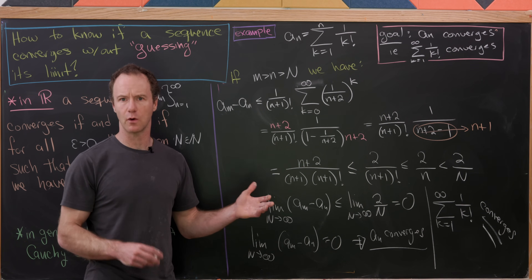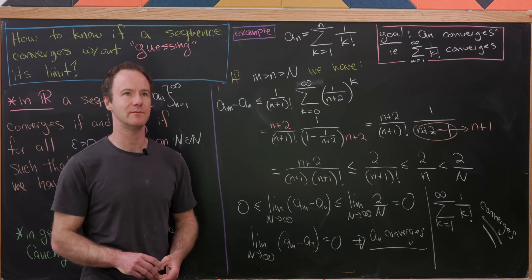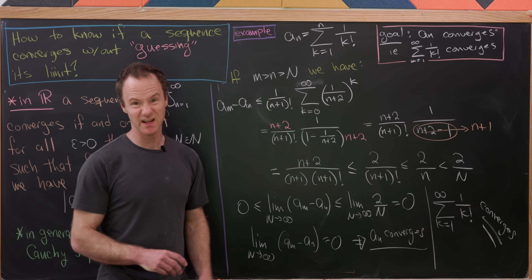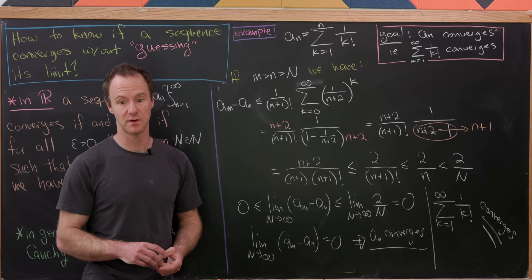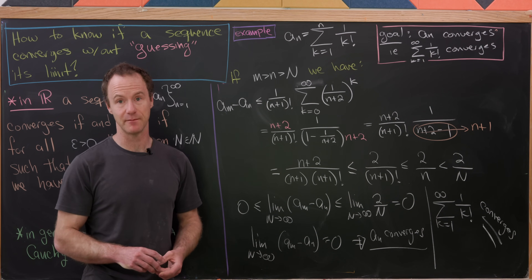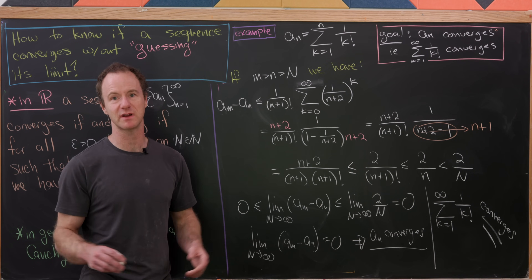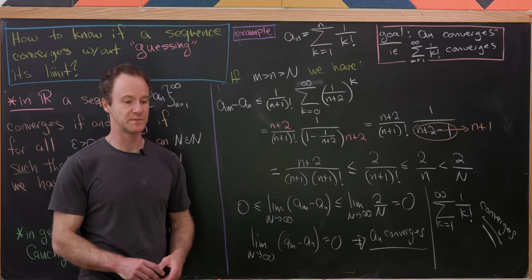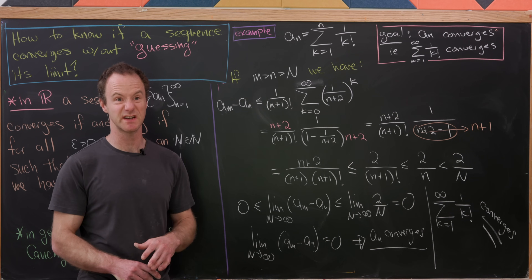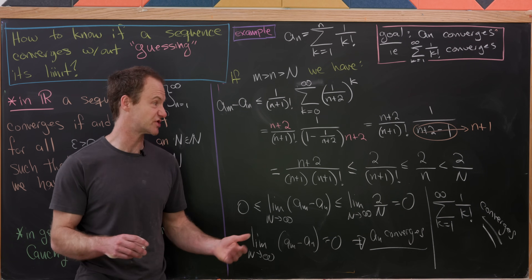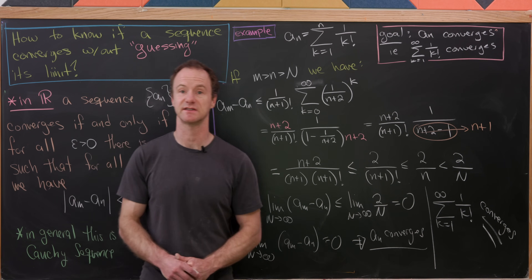Of course we know this sum equals e, Euler's famous number. But suppose that number hadn't been defined yet. Since this series converges and has a nice aesthetic form, it would be logical to give it a name. This is likely how named constants come into existence: they're described as limits of sequences or series that don't converge to other known constants. And that's a good place to stop.